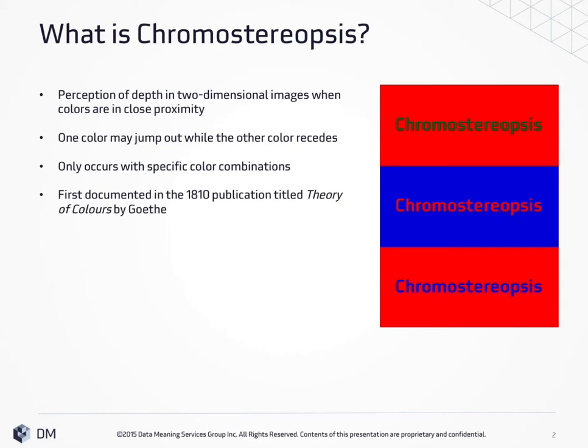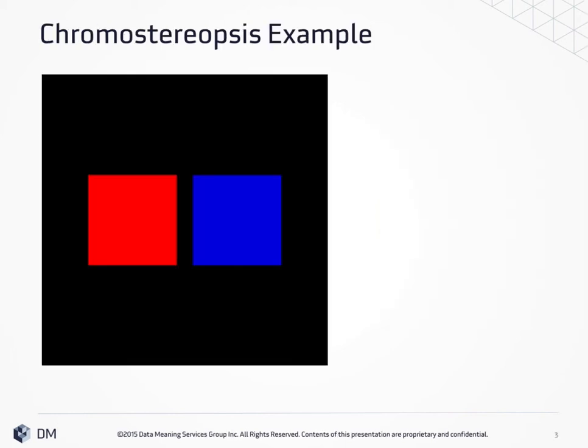The illusion can be seen with red and blue, and red and green color combinations. This was first documented in 1810 in a publication titled 'The Theory of Colors' by Goethe, who was a German writer.